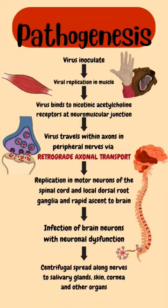Infection of brain neurons leads to neural dysfunction. Then centrifugal spread along nerves to salivary glands, skin, cornea, and other organs.